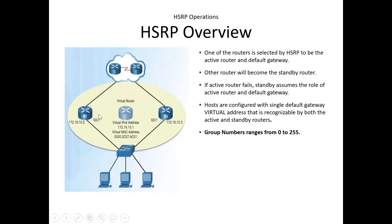If the active router fails, the standby router R2 will take the identity of the virtual router and act as the default gateway. Routers can be grouped together into groups that act as active or standby for a particular network. The group numbers assignable for HSRP configuration range from 0 to 255.